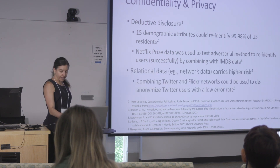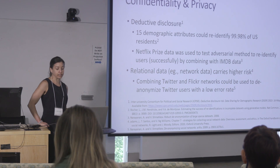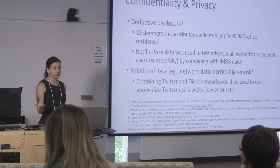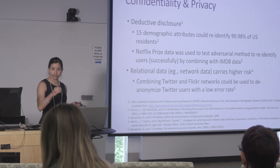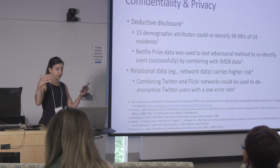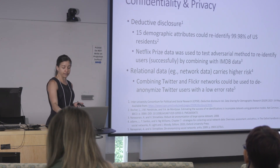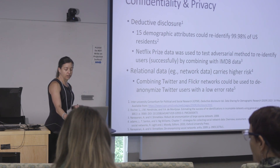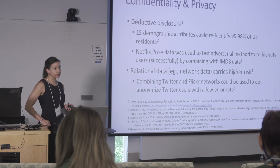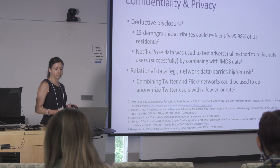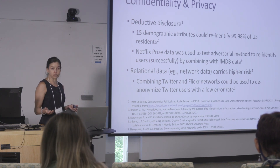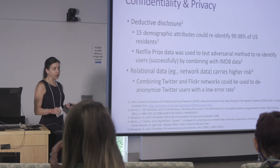Relational data such as network data carries an even higher risk of deductive disclosure because of the aspect of the relations. For example, I as a 45-year-old white woman doesn't seem very unique, but once I'm married to a 52-year-old white man and we share a household in this area, it becomes a narrower and narrower set of people. The same two computer scientists from UT Austin also anonymized a dataset of Twitter users, combined it with Flickr data, and showed they could successfully re-identify one-third of those users with only a 12% error rate — because now they have all of those relations.